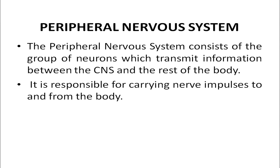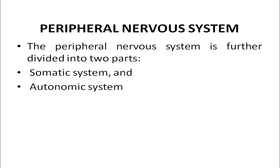The other part of the nervous system is known as the peripheral nervous system, also known as PNS. The peripheral nervous system consists of the group of neurons which transmit information between the central nervous system and the rest of the body. It is responsible for carrying nerve impulses to and from the body. The PNS is further divided into two parts: the somatic system and the autonomic system.